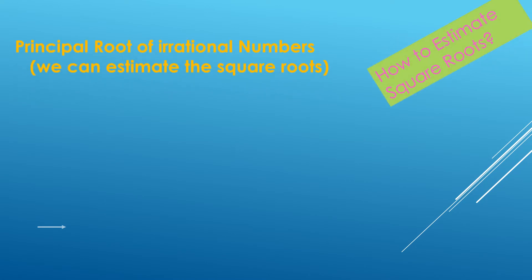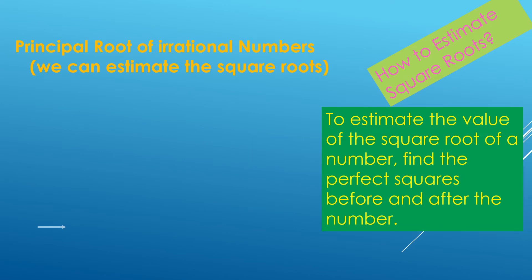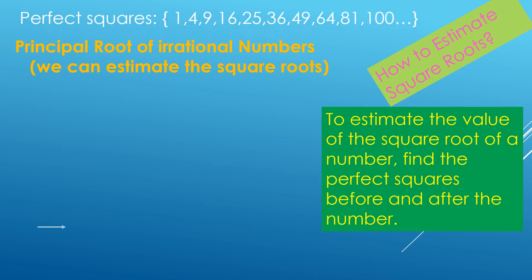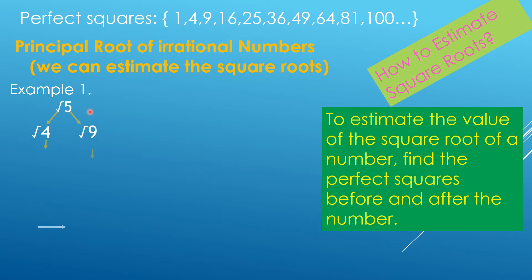So now, we're going to find the square root of a non-perfect square. You need to memorize, or learn, what are perfect squares. For example, we're going to find the square root of 5. You need to know which two perfect squares this square root of 5 lies between. So check the perfect squares before and after: the square root of 5 is between the square root of 4 and the square root of 9. The square root of 4 is 2, and the square root of 9 is 3. Which means that the square root of 5 is between 2 and 3.